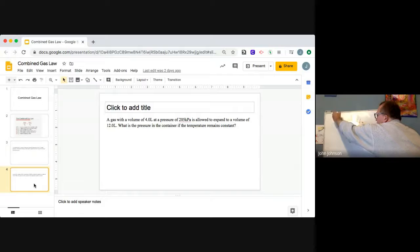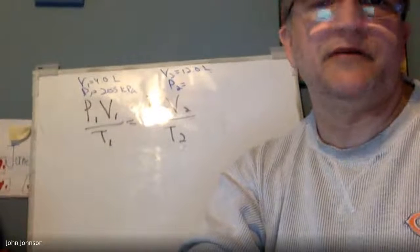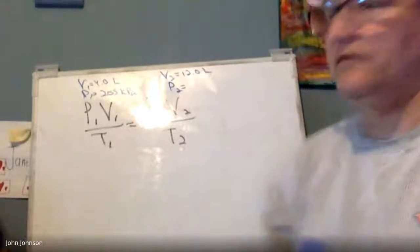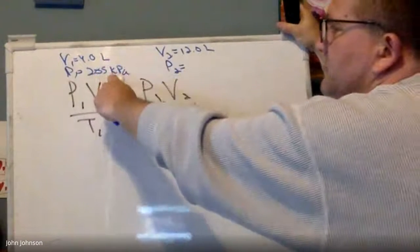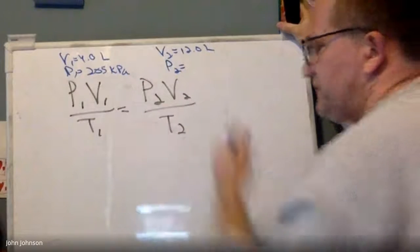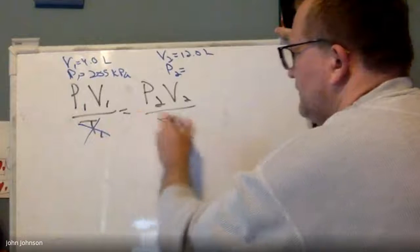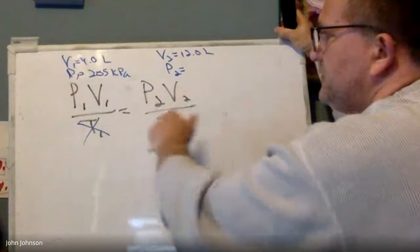In this problem, a gas has the volume of four liters, so we have an initial volume of four liters at a pressure of 205 kPa. So our initial pressure is 205 kPa. It's allowed to expand to a volume of 12 liters, so our new volume is 12 liters. What is the pressure if the temperature remains constant? So we're trying to find P2. This is what I'm talking about with things remaining constant. What we can do to make our lives easier is we can say, okay, I know my initial volume, I know my initial pressure, I know my final volume, I don't know my final pressure, but temperature stays constant. So if temperature stays constant, I just take it out of the equation.